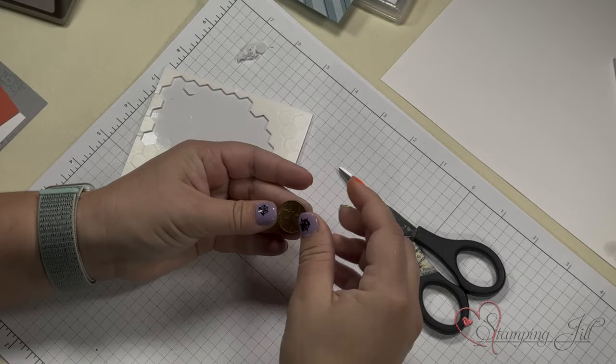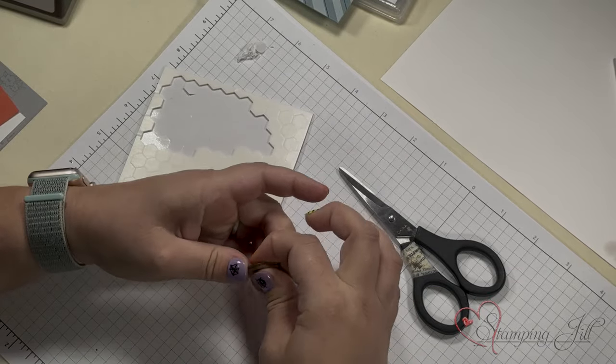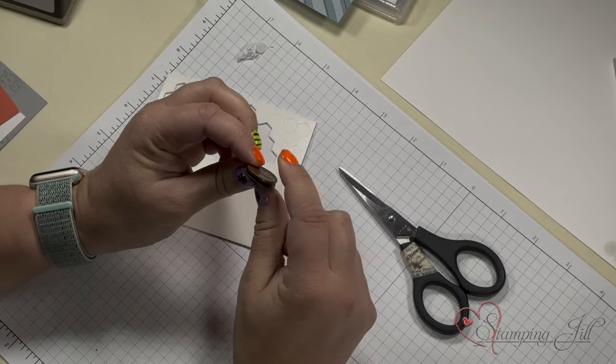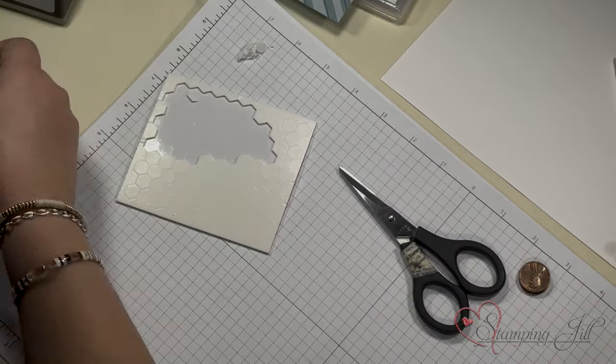So you'll take your rounded dimensional and just stick it in between your two pennies. And this is the whole trick of that card. So I'll show you how to do it.